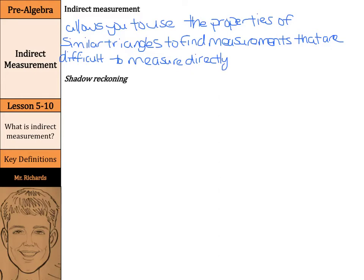And one of these methods is called shadow reckoning. Basically, with shadow reckoning, two objects and their shadows form two sides of similar triangles.